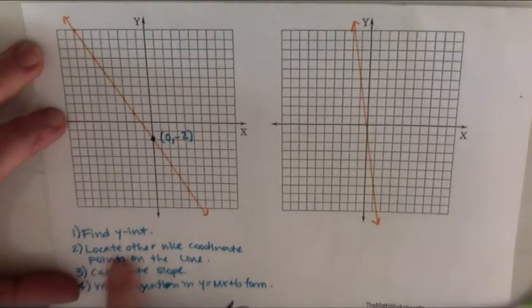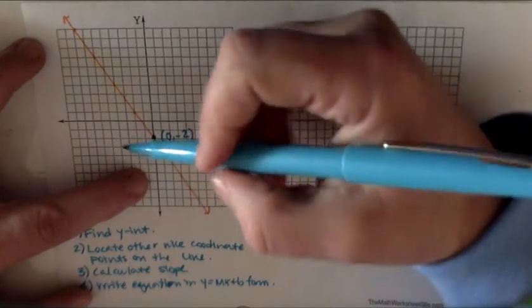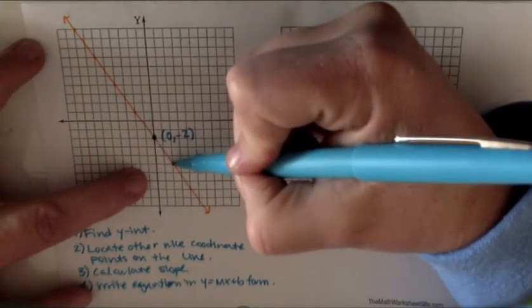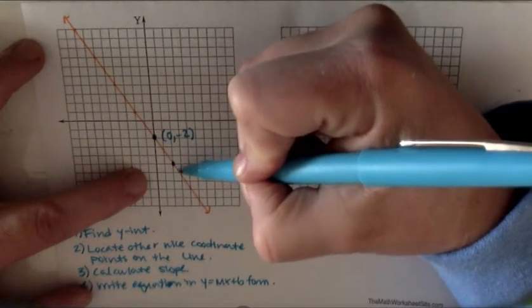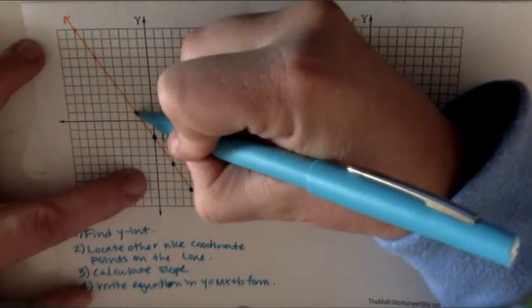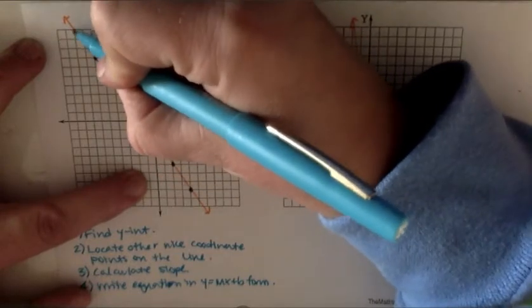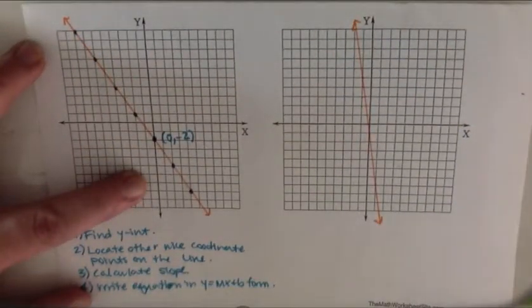We are then going to locate other nice coordinate points on this line. So I'm going to follow this line down until I find a nice coordinate pair. I'm going to go back the other direction and find some too. There we go. Found a bunch of nice coordinate pairs.